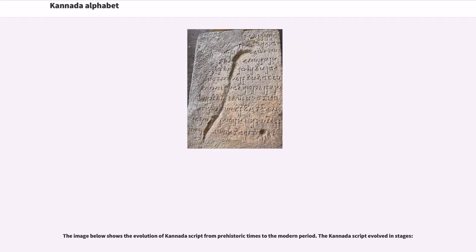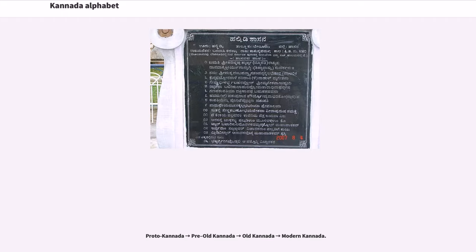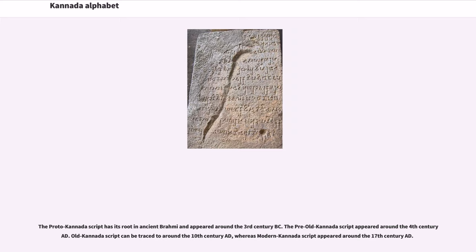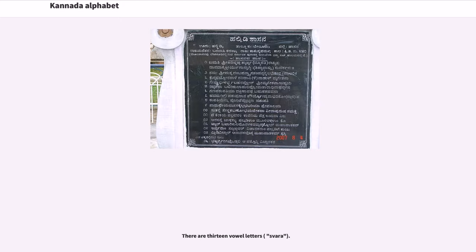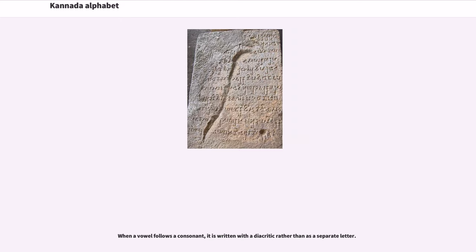The Kannada script evolved in stages: Proto-Kannada, Pre-Old Kannada, Old Kannada, and Modern Kannada. The Proto-Kannada script has its roots in ancient Brahmi and appeared around the 3rd century BC. The Pre-Old Kannada script appeared around the 4th century AD. Old Kannada script can be traced to around the 10th century AD, whereas Modern Kannada script appeared around the 17th century AD.